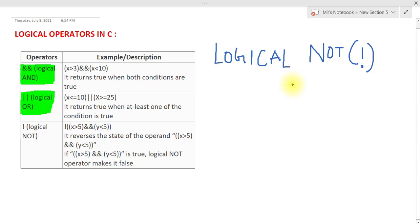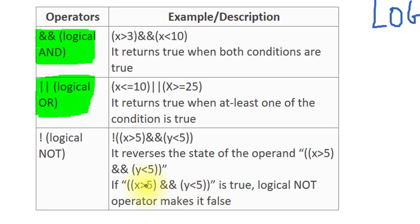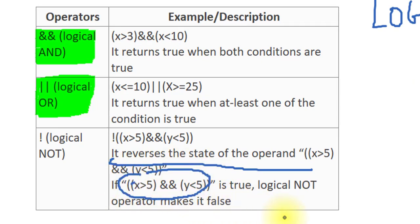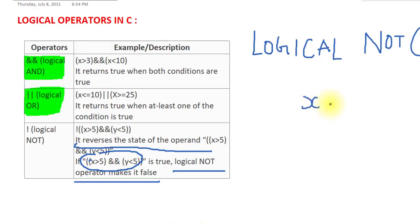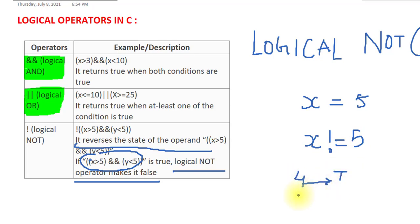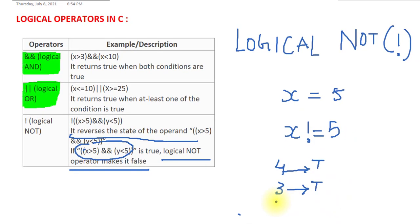Now let's look at the logical NOT operator. This operator returns true when our condition is false, and returns false when our condition is true — it reverses the state of the operand. For example, x not equal to 5 is true for all values which are not 5: going in with 4 gives true, with 3 gives true, and only for 5 does this statement become false.